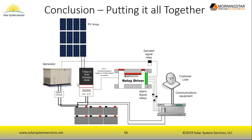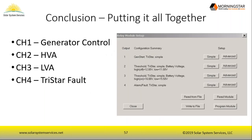Combining multiple functions simultaneously: channel one for generator control, channel two for high voltage alarm (HVA), channel three for low voltage alarm (LVA), channel four for TriStar fault monitoring. This demonstrates using all four channels at once for a comprehensive off-grid monitoring and control system. Note: in the HVA/LVA example, the on/off voltage thresholds are reversed between HVA and LVA configurations.